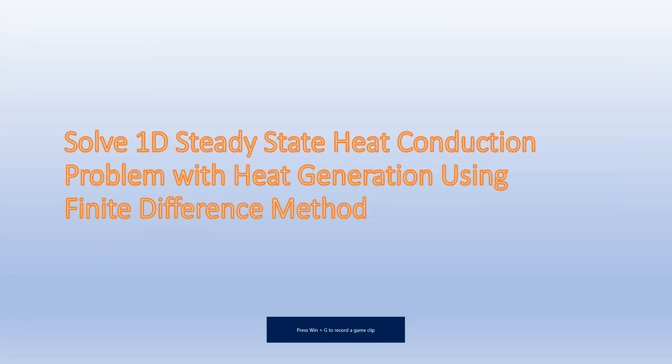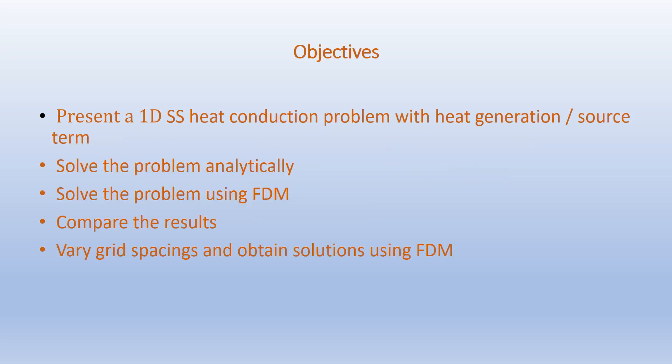Hello friends. In the last video we solved a 1D steady-state heat conduction problem with no heat generation using the finite difference method. In this video we are going to include heat generation by considering a source term. Our objectives are to present a 1D steady-state heat conduction problem with heat generation, solve it analytically, solve it using finite difference method, and compare the results. We will then vary the grid spacings and obtain solutions using finite difference method.